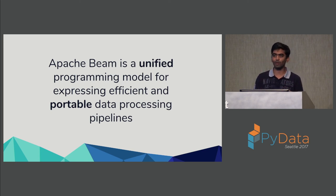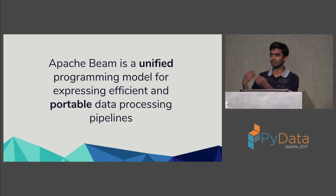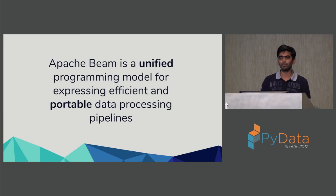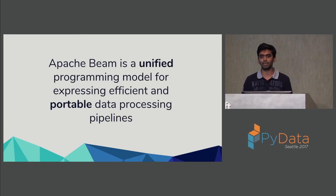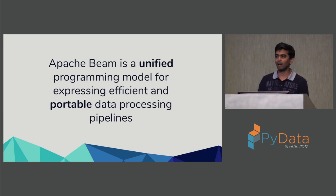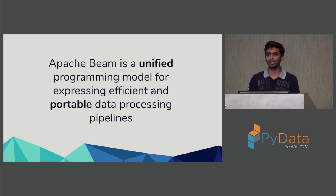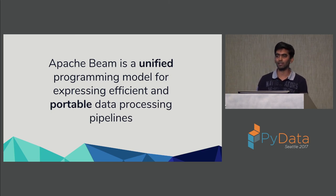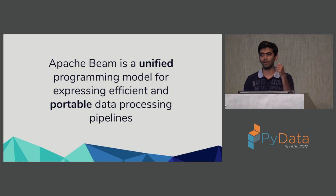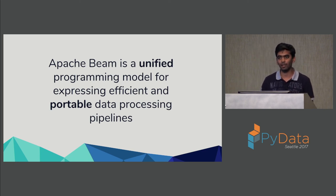In the Beam model, your pipeline should be able to run on any execution framework you choose. The user writes a graph and expresses their pipeline in Beam, and that pipeline should be able to run on any execution framework such as Apache Spark, Apache Flink, or Google Cloud Dataflow. Beam supports different runners, and they all provide a consistent API for running and defining your pipeline.